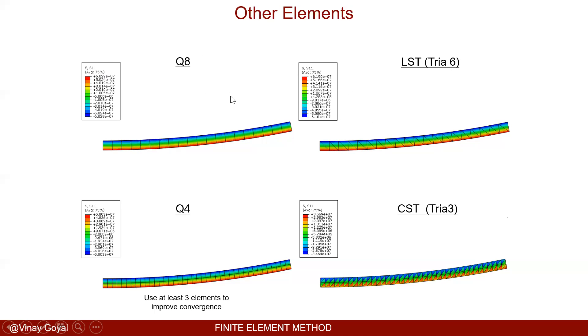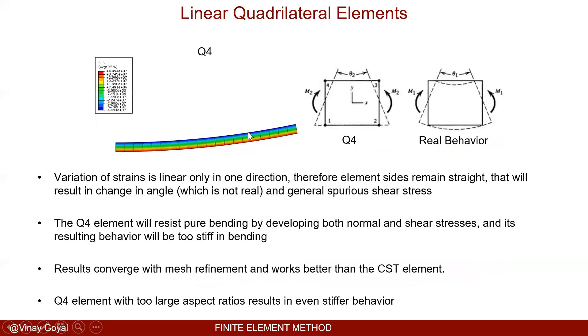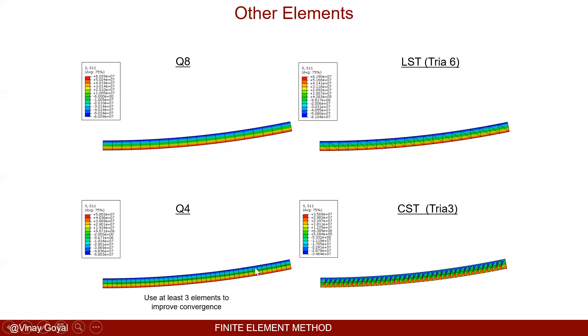But the linear triangle element is way off, very, very stiff. So again, one element through the thickness not very good because I cannot represent this behavior. Two elements got better, and then using higher order elements got rid of these problems.